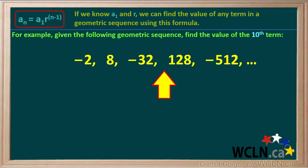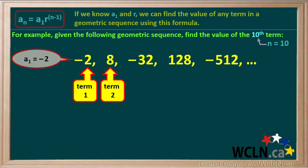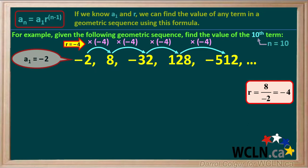We'll do one more example. We're given this geometric sequence and asked to find the value of the tenth term. Pause the video and try this one on your own. We're asked to find the tenth term, so n equals 10. Term 1 is negative 2, so a1 equals negative 2. Term 2 is 8 and term 1 is negative 2, so the common ratio r is 8 divided by negative 2, which is negative 4. So r equals negative 4. We can see that multiplying each term by negative 4 gives the next term — negative 2 times negative 4 equals positive 8, and 8 times negative 4 equals negative 32, and so on.